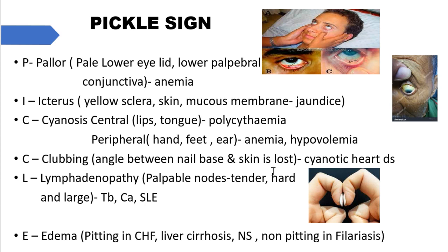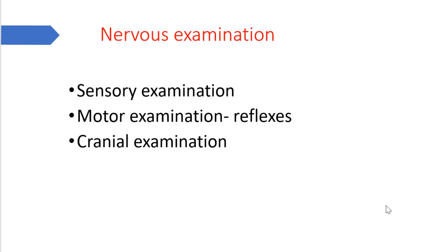C is also for clubbing — where the angle between the nail base and skin is lost. Cyanotic heart disease can present with clubbing of fingers. When you join the fingers together, the diamond-shaped angle between both fingers is lost in clubbing. L is for lymphadenopathy — palpable lymph nodes that can be tender, hard, or large — found in TB, carcinomas, and SLE. E is for edema: pitting edema found in congestive heart failure, liver cirrhosis, and nephrotic syndrome; non-pitting edema in filariasis.